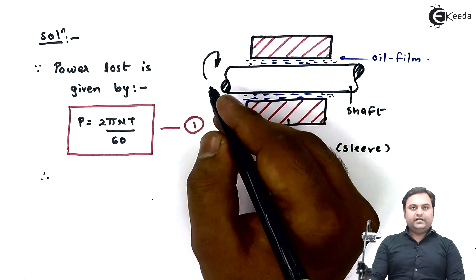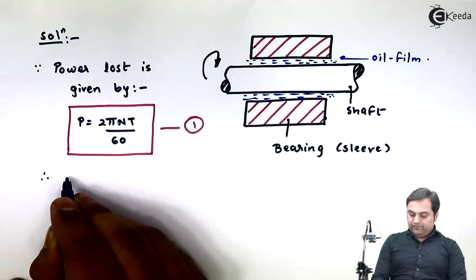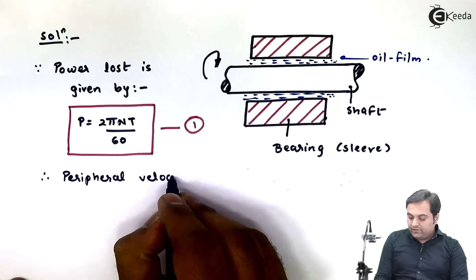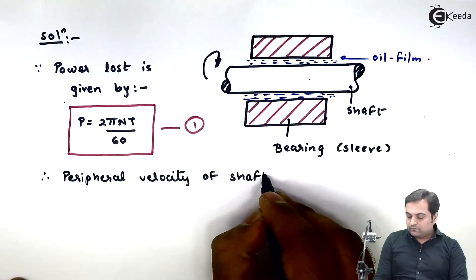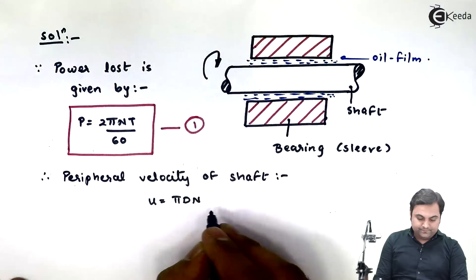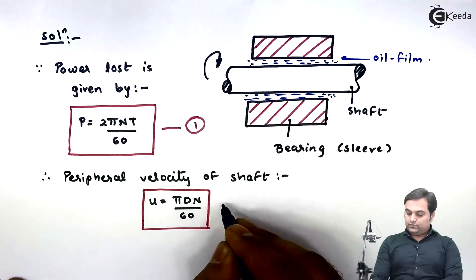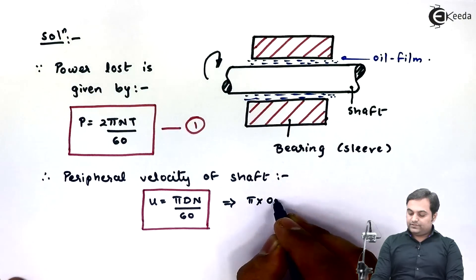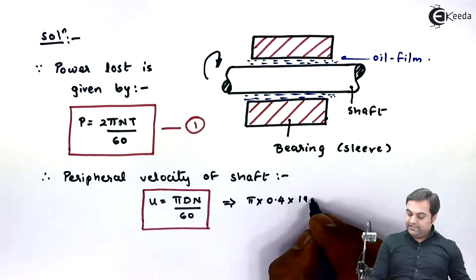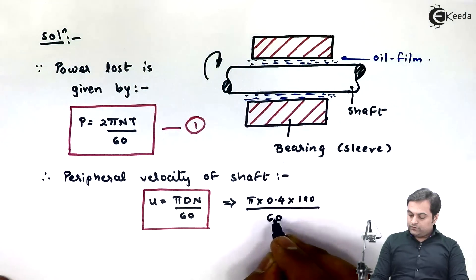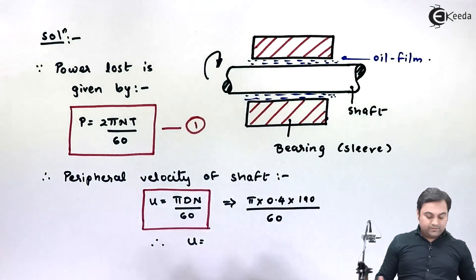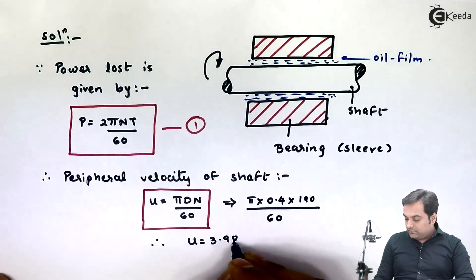The peripheral velocity of the shaft is given by u equals pi D N divided by 60. Substituting the values: pi into D which is 0.4 meter, into N which is 190 rpm, divided by 60. Calculating this gives u equals 3.98 meter per second. This is the peripheral velocity, also called the tangential velocity of the shaft, and the oil film moves with this velocity.